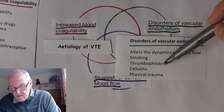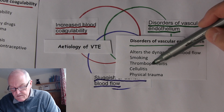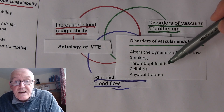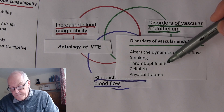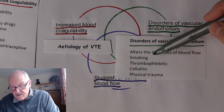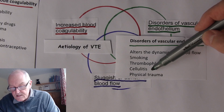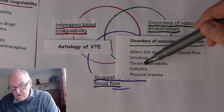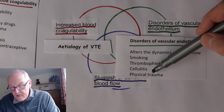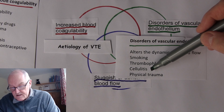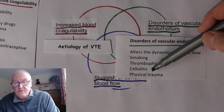Thrombophlebitis — where 'itis' means inflammation and 'phleb' means vein — is when you get thrombus formation as a result of usually infection in a vein. Cellulitis in the tissues can also damage the vascular endothelium as part of the infective process, caused by the production of bacterial toxins, very often staphylococcal. Physical trauma is another factor that can damage the vascular endothelium.